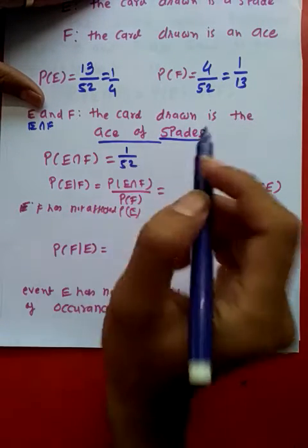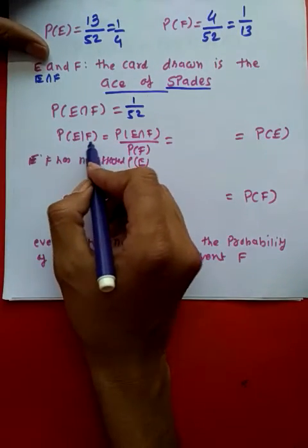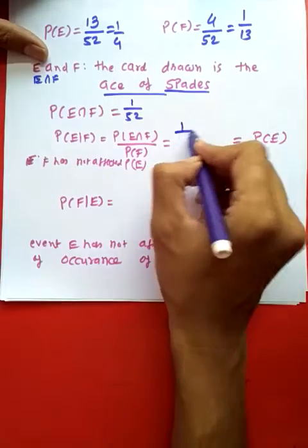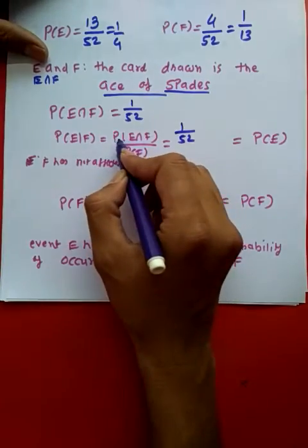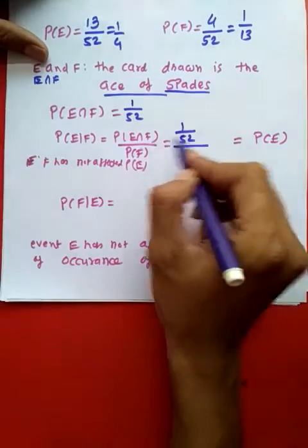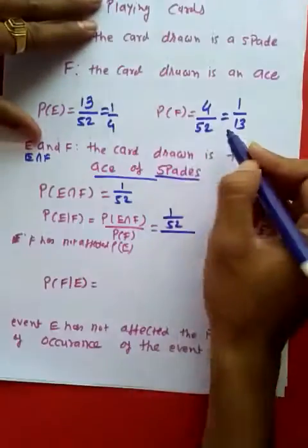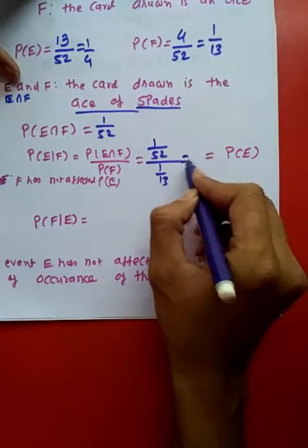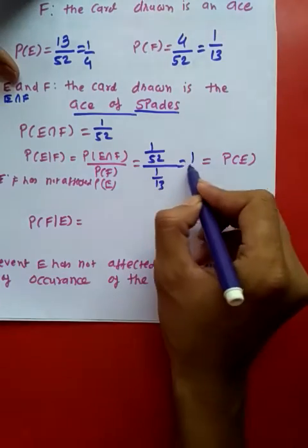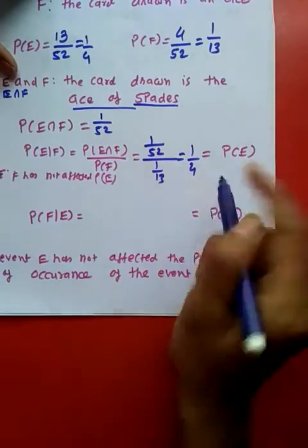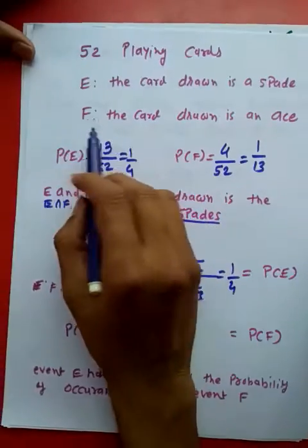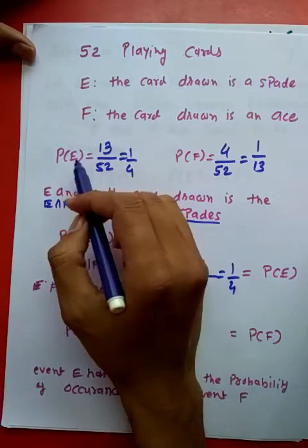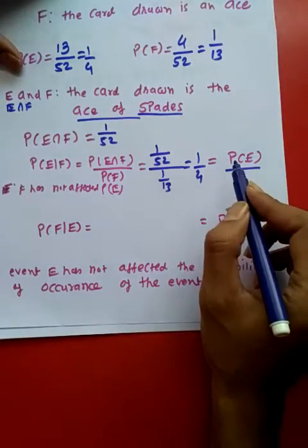Now if I want to find out P(E|F), I will put it in calculation: P(E∩F) is 1/52, P(F) is already given which is 1/13. If I simplify this, I will get 1/4, but 1/4 is exactly P(E).